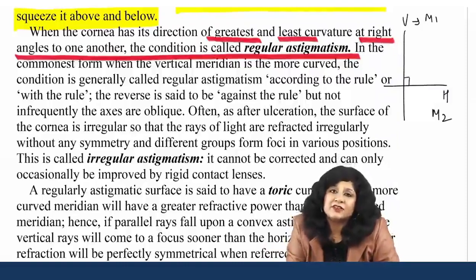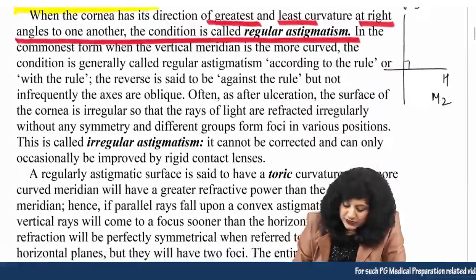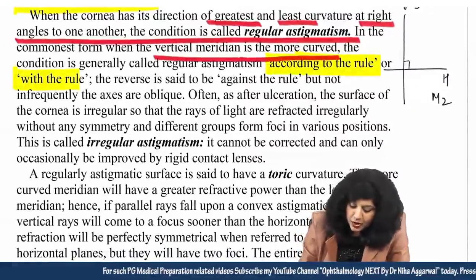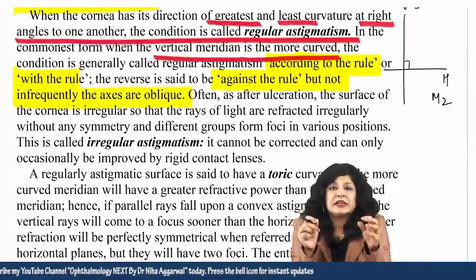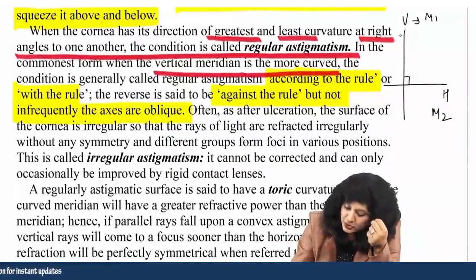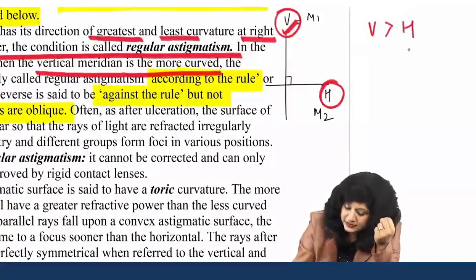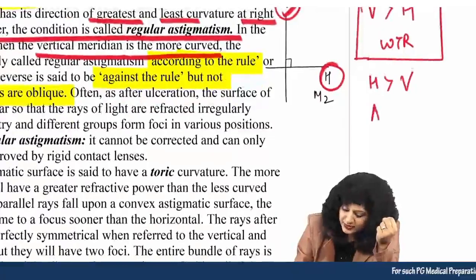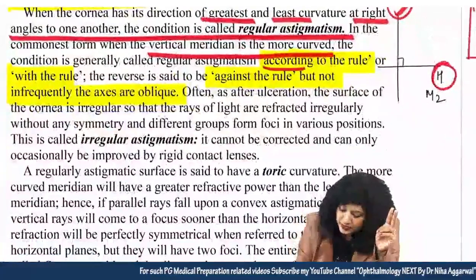The two principal meridians — greatest curvature and least curvature — are perpendicular to each other in regular astigmatism. When the vertical meridian is more curved than horizontal, the condition is called 'with the rule'; the reverse is 'against the rule.' So with the rule: vertical more curved than horizontal. Against the rule: horizontal more than vertical.